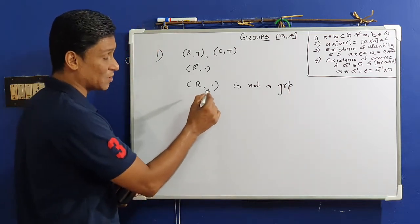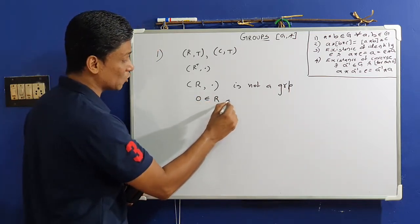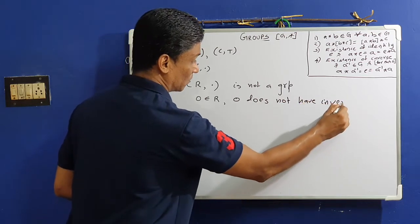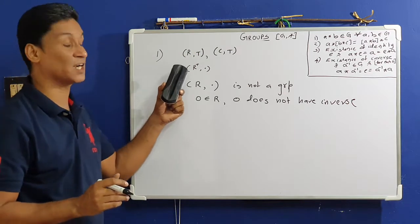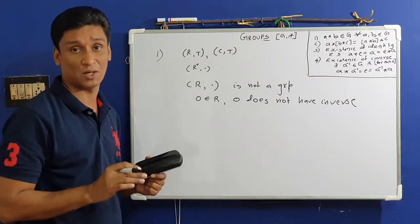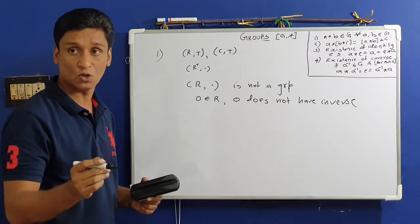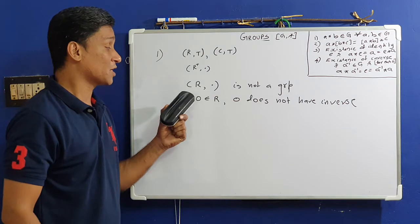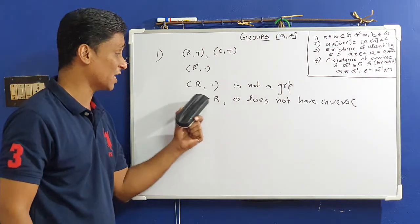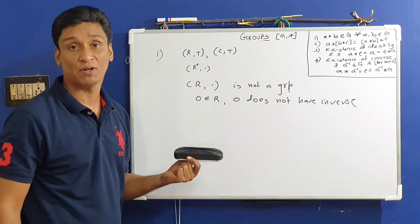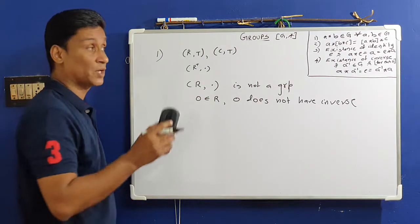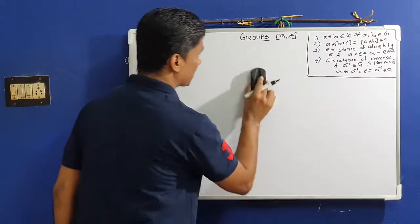The set of all real numbers under multiplication is not a group because the element 0 does not have a multiplicative inverse — 1/0 is not defined. Therefore (ℝ, ·) is not a group. The set of all real numbers under addition and the set of all complex numbers under multiplication are examples to examine.